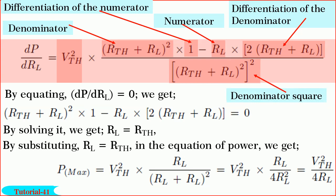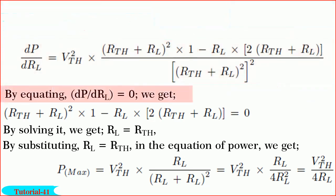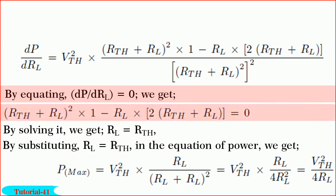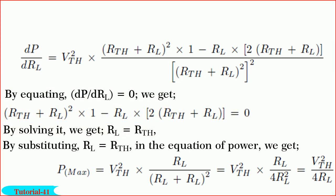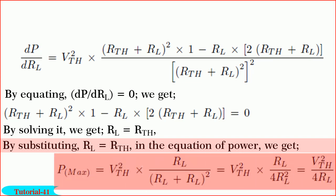By differentiating using the U/V form and equating dP/dR_L to zero, we get (R_th plus R_L)² minus 2·R_L·(R_th plus R_L) equal to zero, and by solving we get R_L is equal to R_th. By substituting this condition of R_L equal to R_th into the power equation, we get P_max equal to V_th²·R_L divided by (R_L plus R_L)², which gives P_max equal to V_th² divided by 4·R_L.